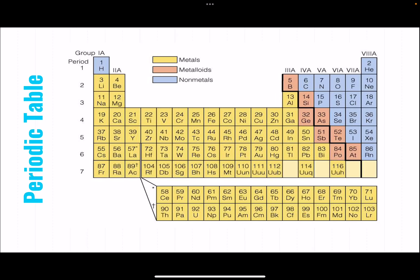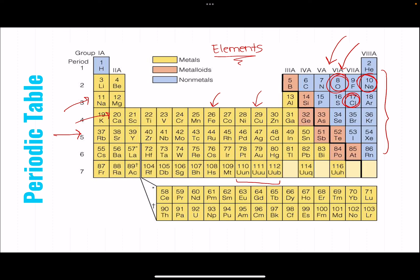Here is the periodic table with all the elements we know so far. This is actually an older version, but the most common ones are still here. We can see copper, iron, calcium — which we need for our bones — sodium as in salt, oxygen, chlorine, noble gases like neon for neon lights. Here's silver, and here's gold. So we know a lot of elements.